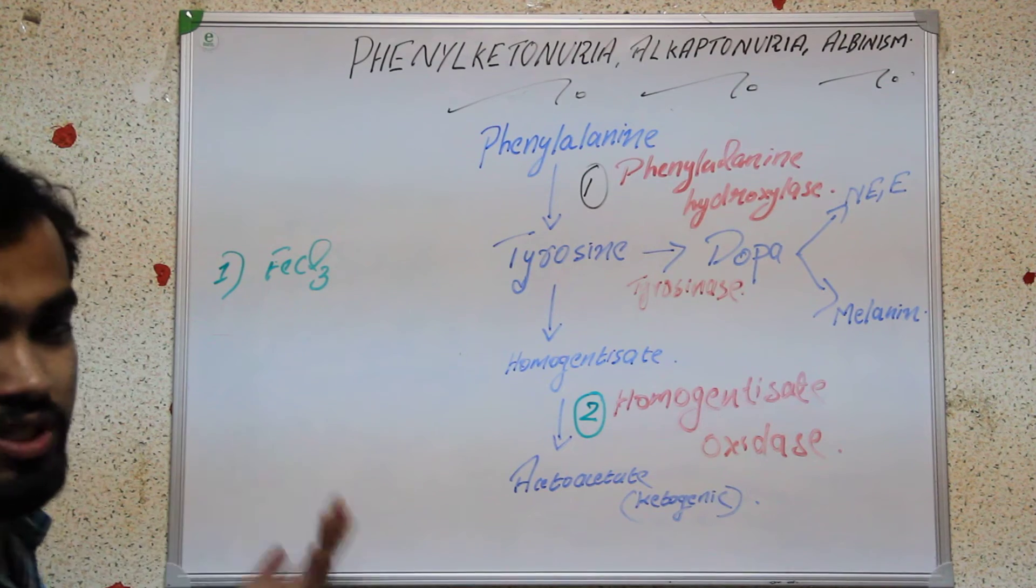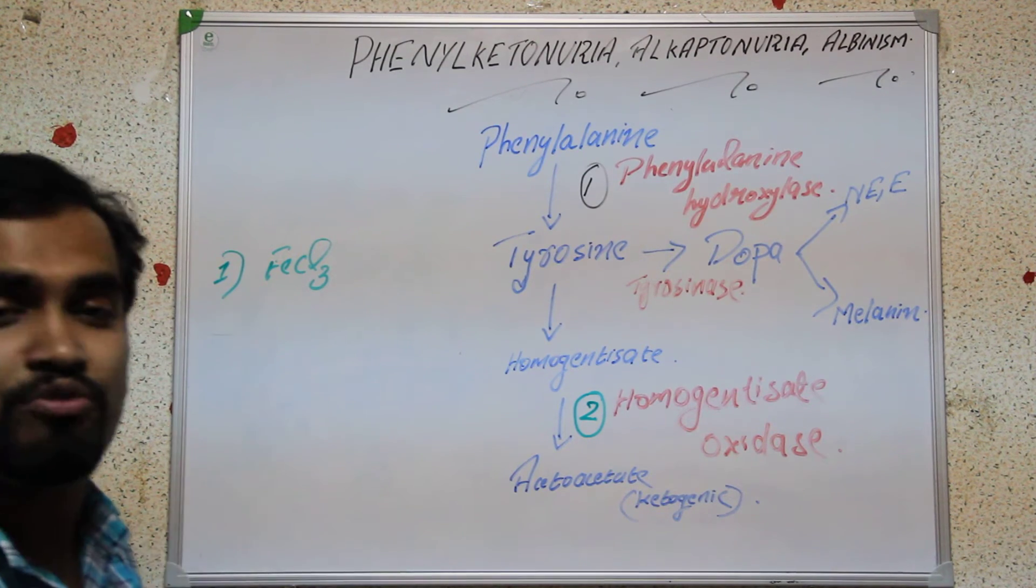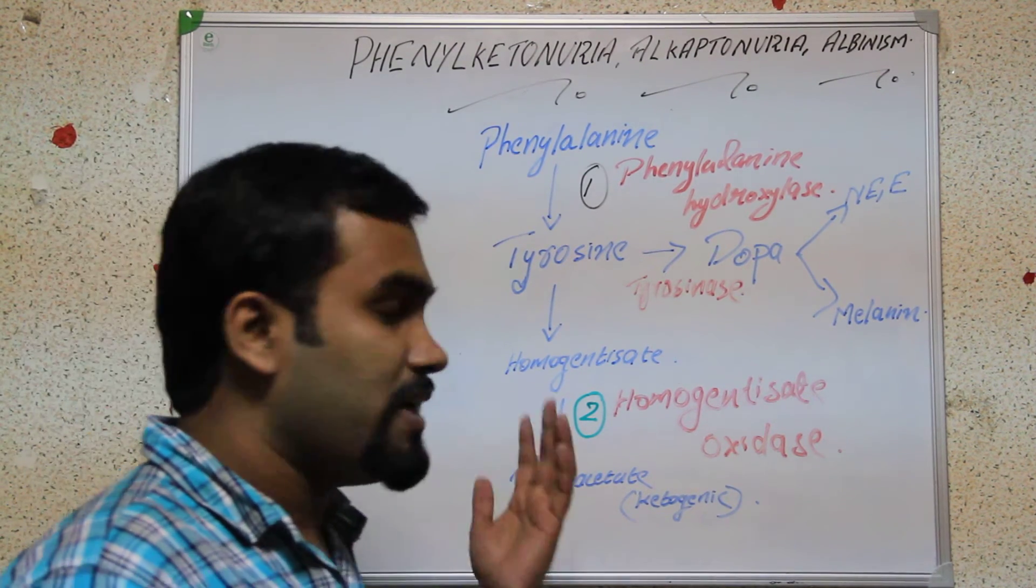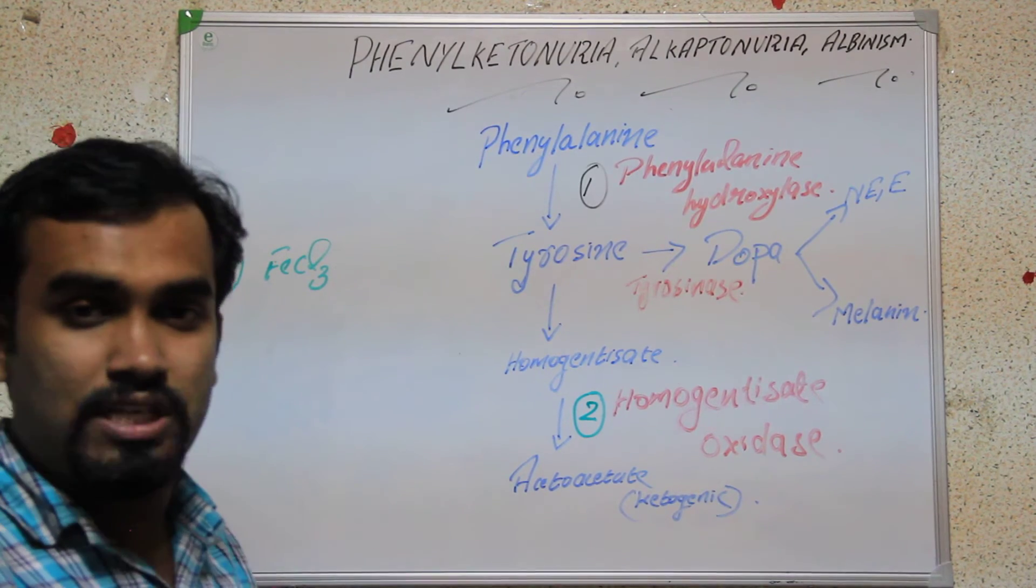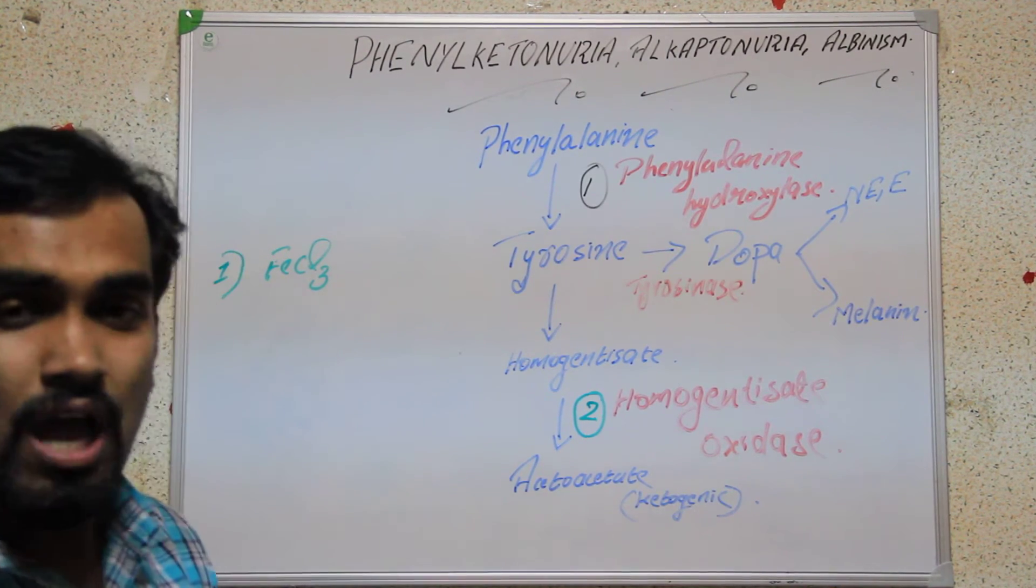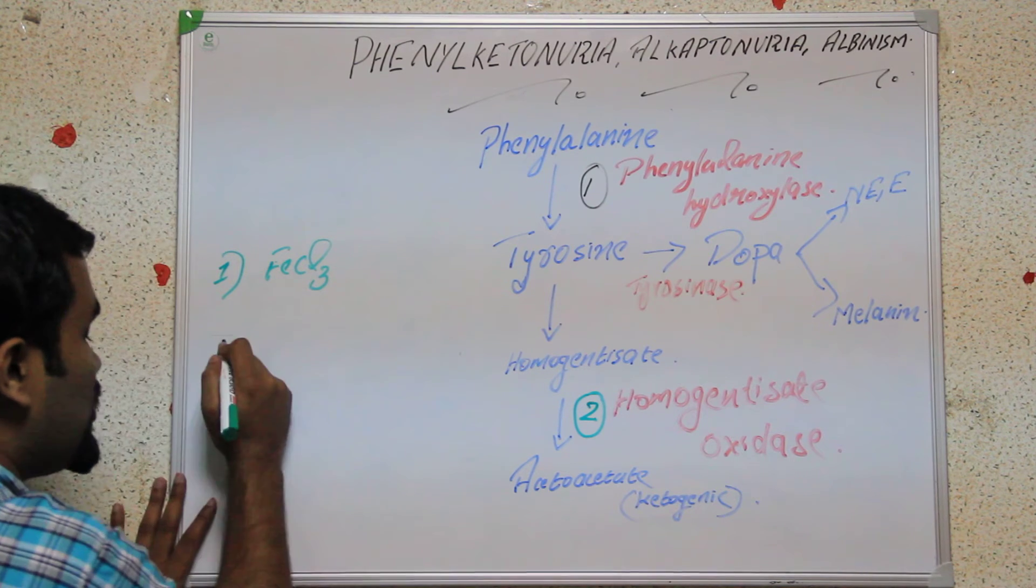We will add two to three drops of ferric chloride to the urine of this patient. If the result is positive, it means the patient is suffering from alkaptonuria. Then another test known as Benedict's test.